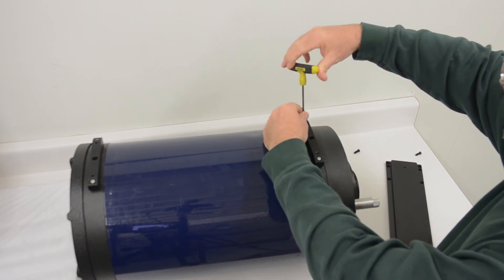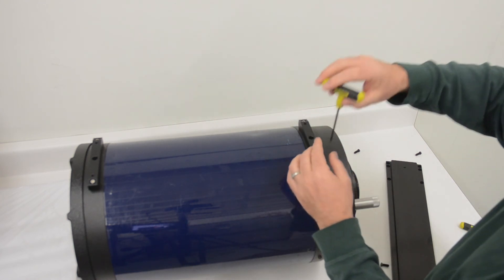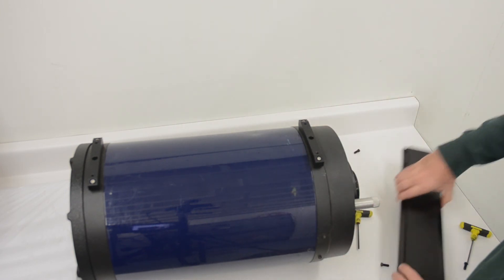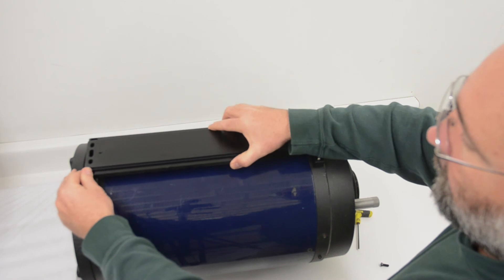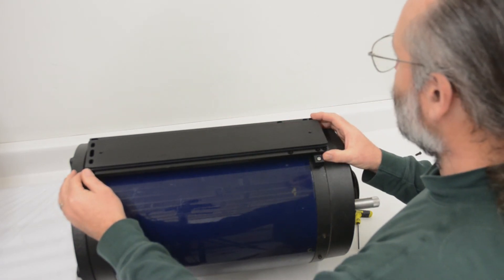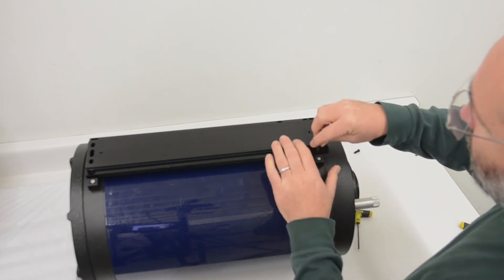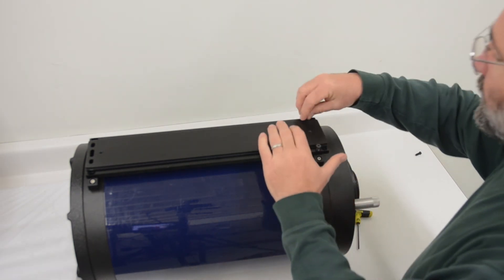Correct screws are also important. Too short a screw or the wrong threads and your dovetail will not be secure. Too long and the screw may protrude into the OTA and damage your mirror. Be very cautious when buying parts from the hardware store. Be absolutely sure that you have the correct screw. Using the correct Farpoint kit is the safe way to go.